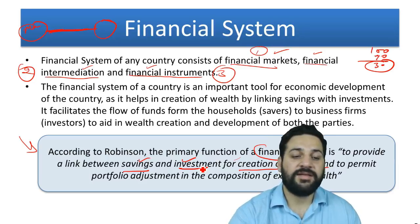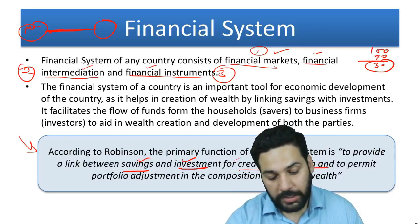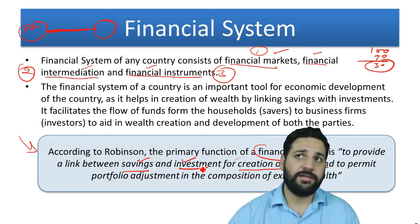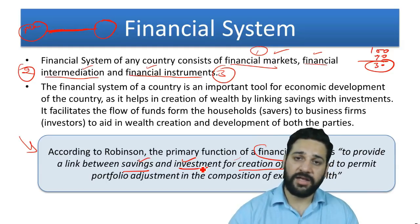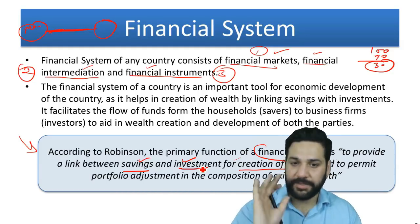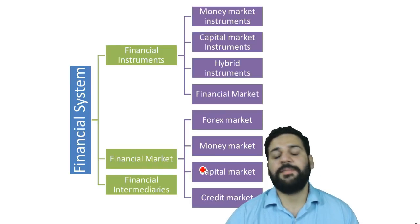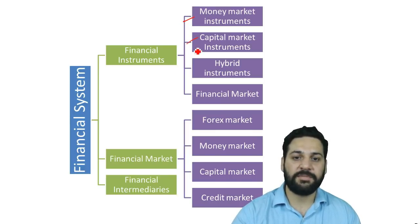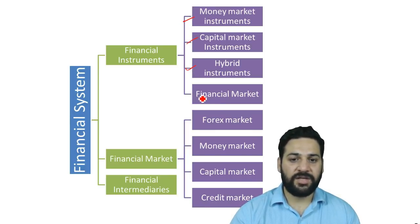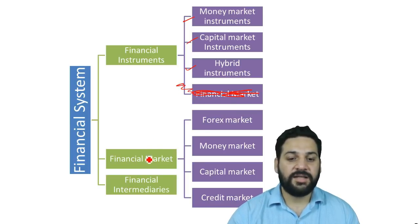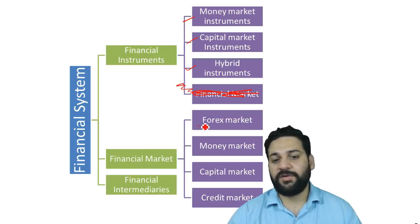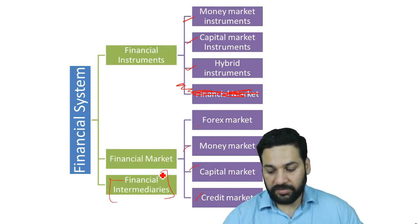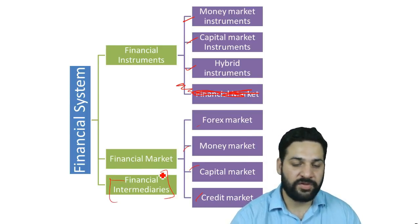The financial system helps businesses and industry to raise funds from the financial market. The basic structure includes: financial instruments such as money market instruments, capital market instruments, and hybrid instruments; financial markets such as the forex market, money market, capital market, and credit market; and financial intermediaries.